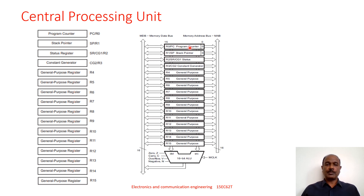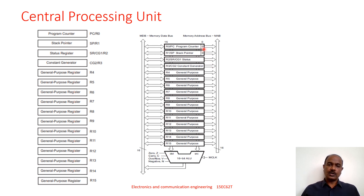The program counter R0 holds the address of the next instruction to be executed by the processor. As you can see, the LSB of this program counter is hard-wired to bit 0 — meaning the address loaded into the program counter will always be an even address. In the MSP430 microcontrollers, each instruction is stored in memory at an even address, which is why the LSB of the program counter is always 0.